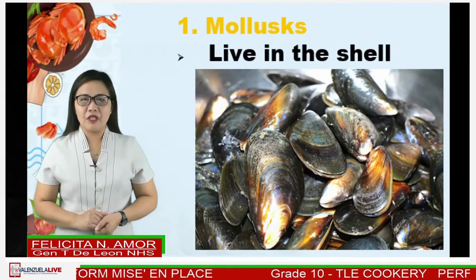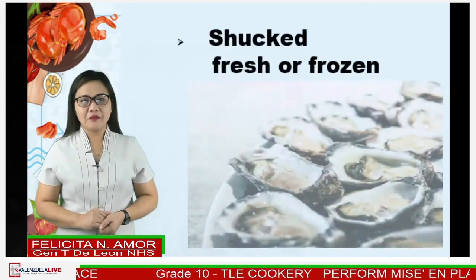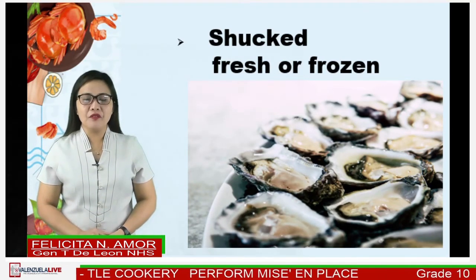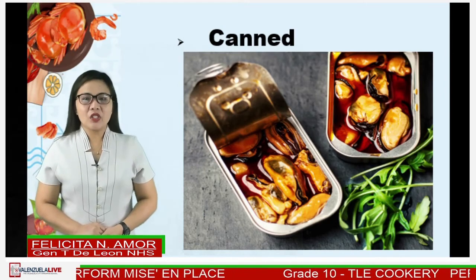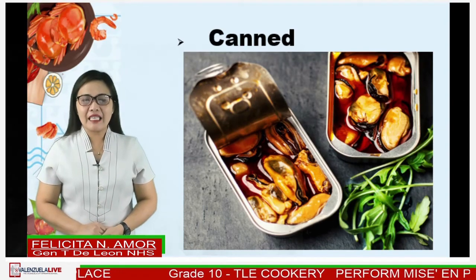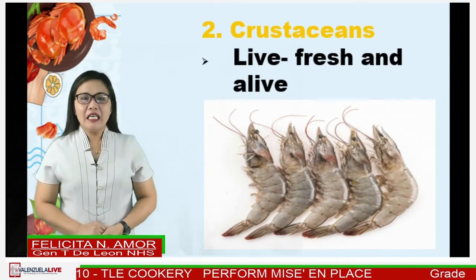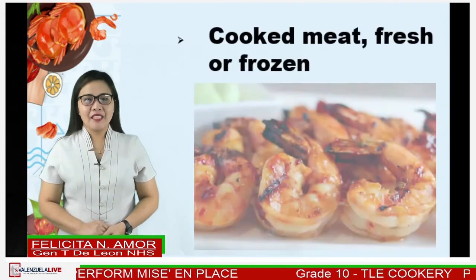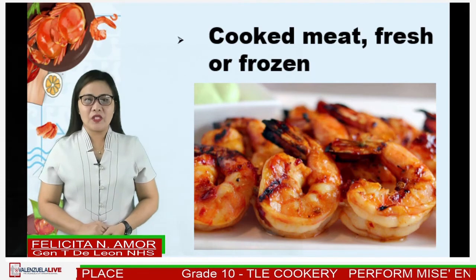For market forms of shellfish, number one, mussels can be purchased live in the shell. Next, shucked — either fresh or frozen — shellfish that have had the meat removed from the shell. We can also buy shellfish in cans. Remember, it's always important to check the best before or use-by dates when buying canned food. Crustaceans are sold in the market fresh and alive. Keep in mind that the fresher the seafood, the healthier and more flavorful they are. Crustaceans are also sold in the market as cooked, either fresh or frozen.